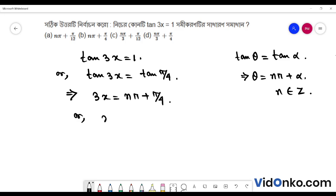I will write x value n pi by 3 plus pi by 12. So, I will write an option that is equal to n pi by 3 plus pi by 12.